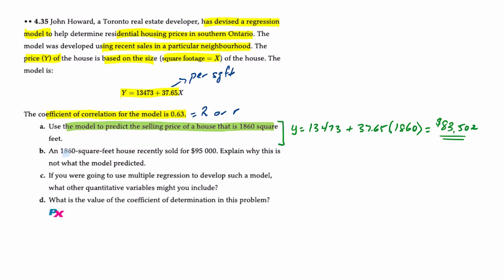Requirement B: we're told that an 1,860 square foot house recently sold for $95,000. Explain why that's not what the model predicted. Well, the model that John Howard created is based only on one thing: square feet. And it's likely that square footage or size of house is not the only factor to determine what a house should sell at, which means there could be other additional factors.